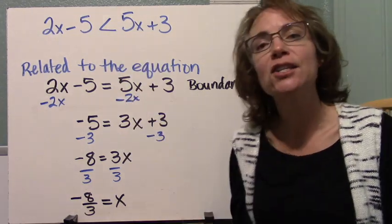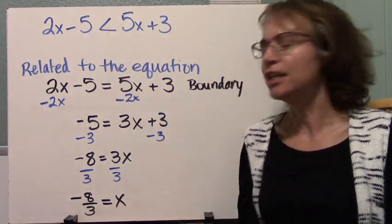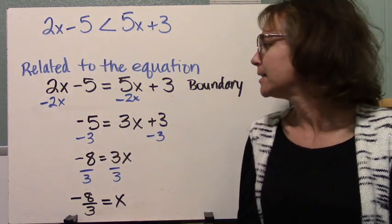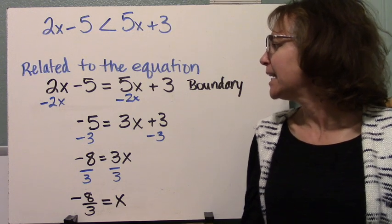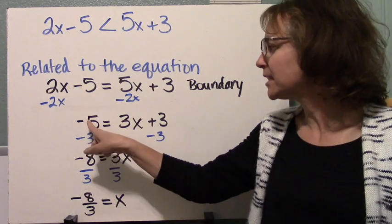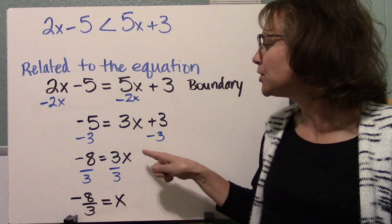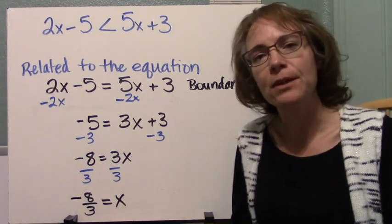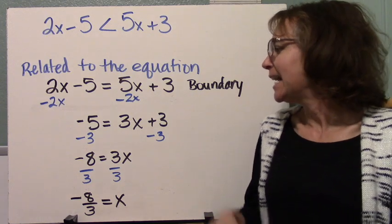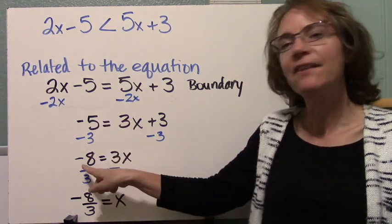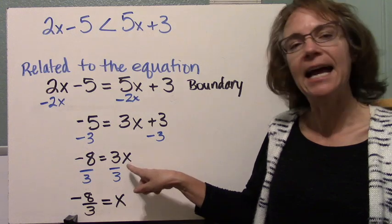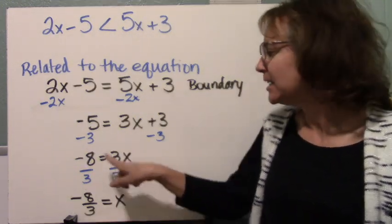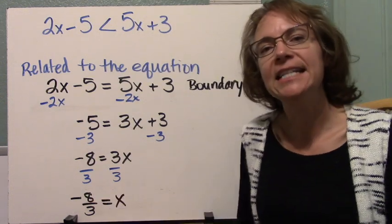So we can go ahead and solve this equation and we can get our boundary point. So subtract 2x from both sides, the subtraction property of equality, and so then we have negative 5 is equal to 3x plus 3. And so then we can subtract 3 from both sides, subtraction property of equality. And so we have here negative 8 is equal to 3x. Dividing both sides by 3, we get what 1x is. So we have 1x is equal to negative 8 thirds.